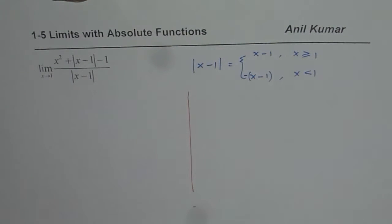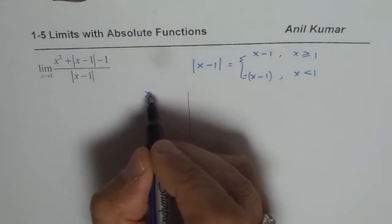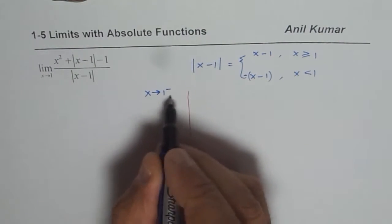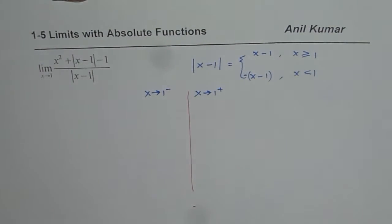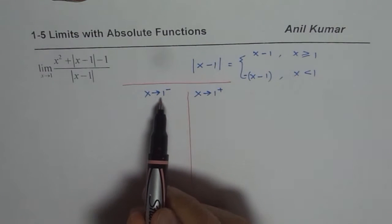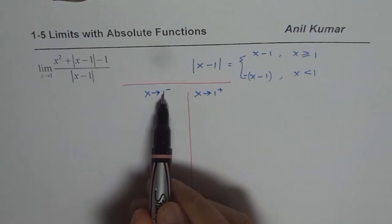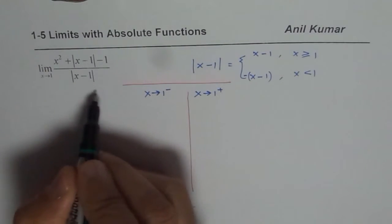You have to split your function into two different parts and then solve it. Now here one part will be when x is approaching 1 but from the left side. So x is approaching 1 but from left side means negative. The other is when x is approaching 1 but from the positive side. So these are the two sections which we are going to consider. Now when x is approaching 1 from the negative side, then how the function will be? Let us rewrite our function here and then we will find the limits. So let me just take up the function itself.